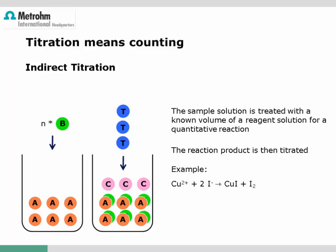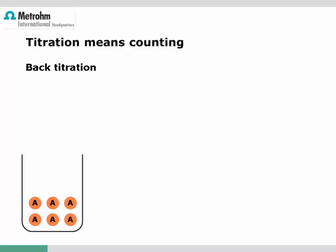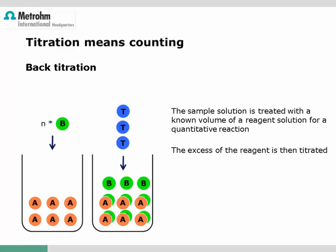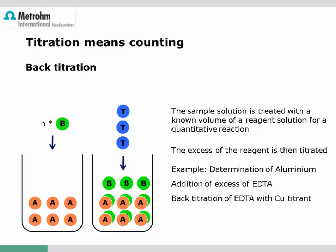One example is the titration of bivalent copper ions. A known amount of potassium iodide is added to the sample solution, which enforces the reduction of the bivalent copper, generating iodine. This iodine is then titrated in a redox titration using thiosulfate solution. Another indirect method is the back titration: the analyte solution is treated with an excess of reagent solution, and the excess reagent is then titrated directly. A typical application is the determination of aluminum, since no suitable sensor is available — the aluminum solution is treated with excess EDTA, and the remaining EDTA is titrated with a copper solution using a copper-sensitive electrode.